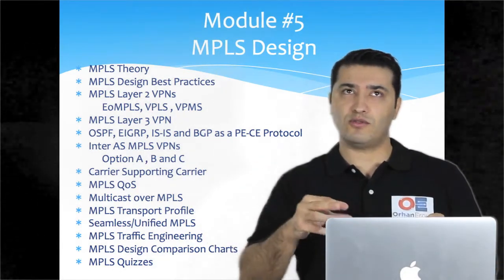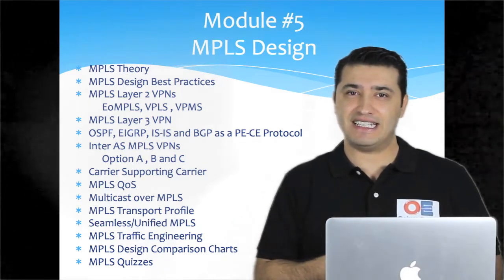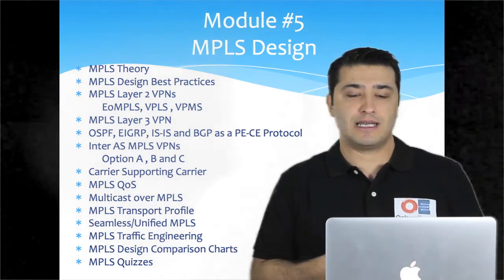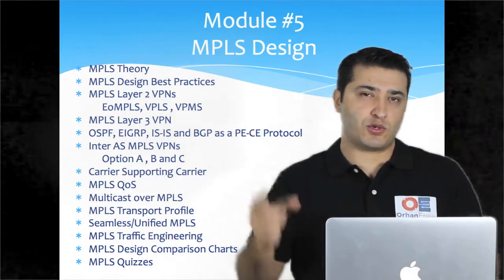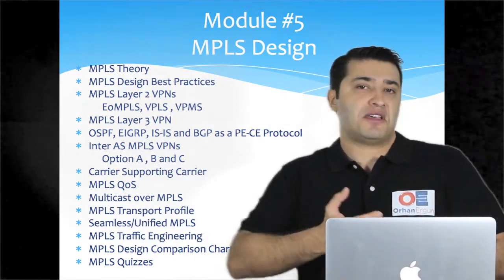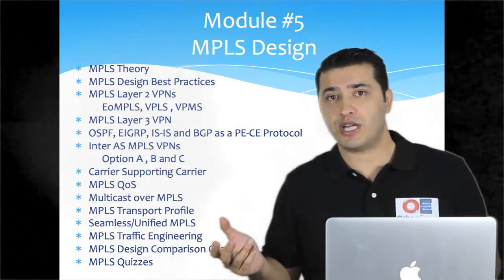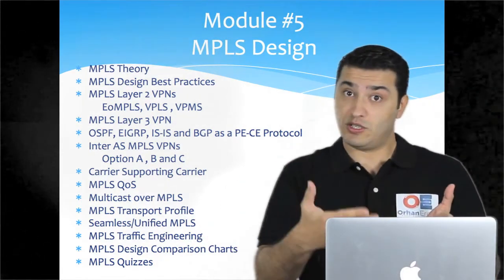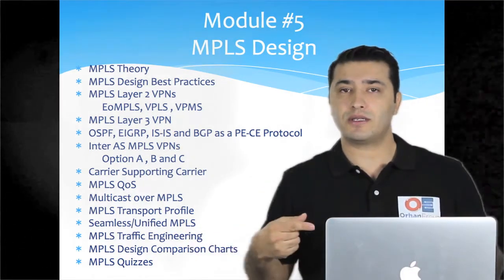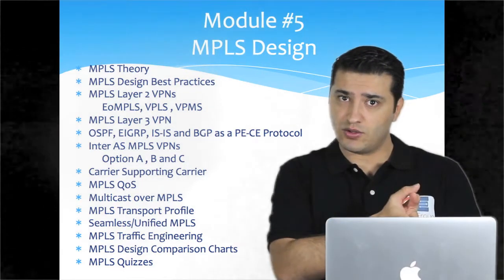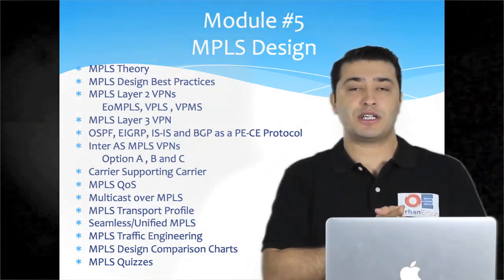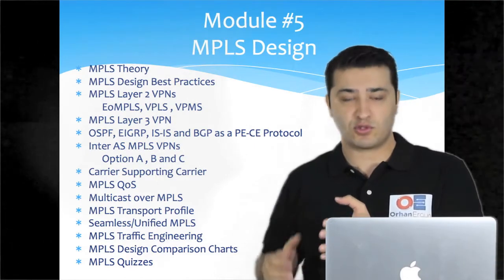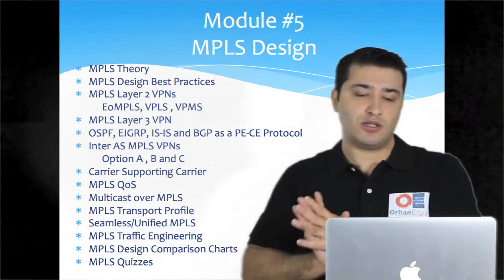We will compare Layer 2 versus Layer 3 MPLS VPNs. In exam scenarios, comparisons of different technologies are very common and very important. That's why this course includes at least 20 comparison charts, such as IPv6 tunneling mechanisms, OSPF versus EIGRP, Layer 2 versus Layer 3 MPLS VPN, and VPWS (EoMPLS) versus VPLS. Once you finish all the videos in the membership area, you will continue with comparison charts, quizzes, e-books, the Cisco CCDE workbook, and scenario book.